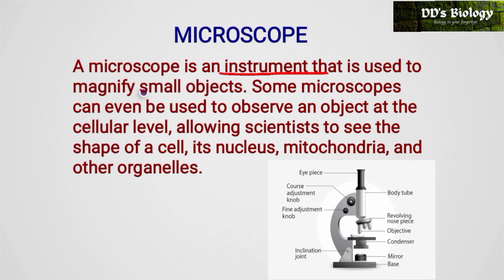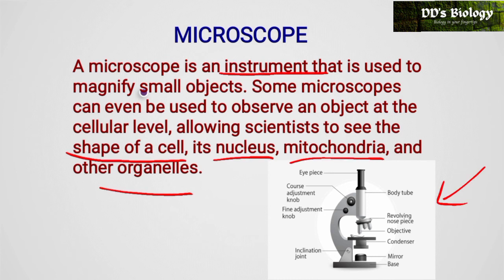We can also see the shape of the cell, nucleus, mitochondria, and other organelles in the cell. There are several types of microscopes used to detect structures based on the specimen. This is a picture of the normal compound microscope, which will be explained later.